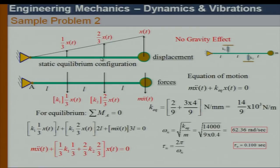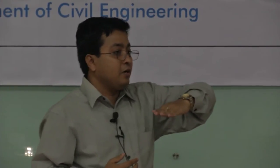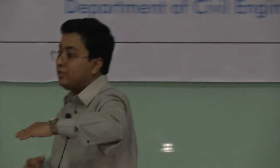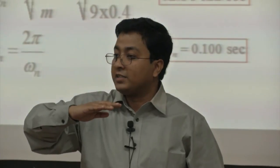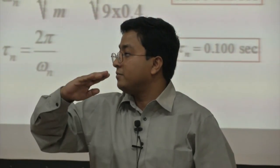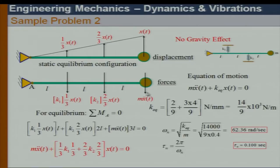If we simply ignore the gravity effect from the beginning for this type of problem, we get the same equation. We need not worry about finding the static equilibrium configuration — we can assume the static equilibrium is the original configuration and calculate oscillations from there. The mg effect is dropped and we get the same result.